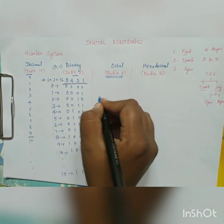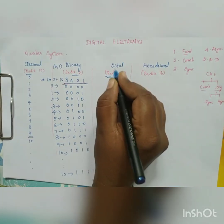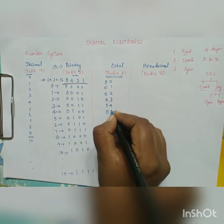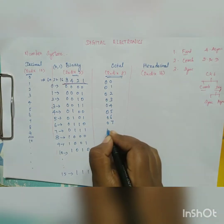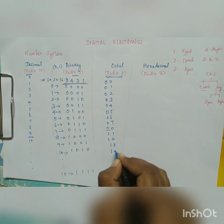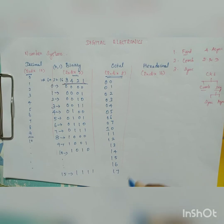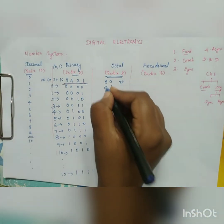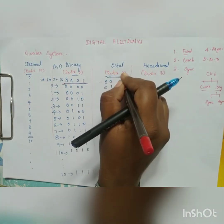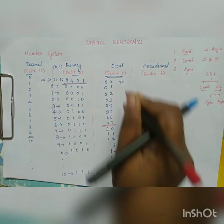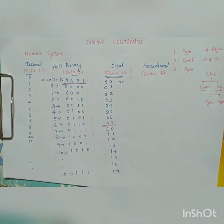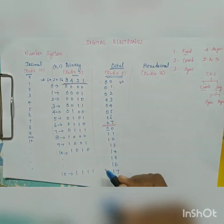Octal has a radix of 8. The octal digits are 0, 1, 2, 3, 4, 5, 6, 7. After 7, we represent the next number as 10, then 11, 12, 13, 14, 15, 16, 17. After 17 comes 20, 21, and so on. Since digits go from 0 to 7, the base is 8. This is the octal number representation.